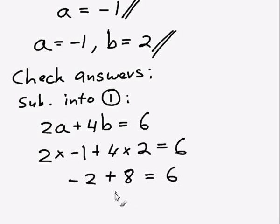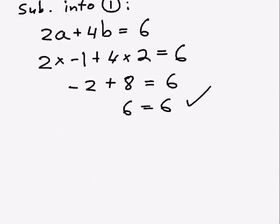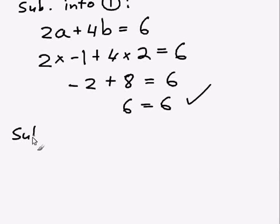So negative 2 plus 8 equals 6. Negative 2 plus 8 is 6, so it's 6 equals 6. So the equation is correct. So our answers check out with equation 1.